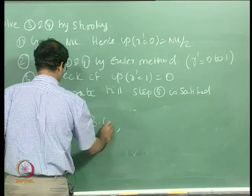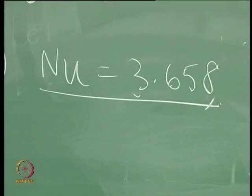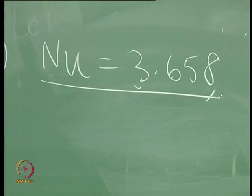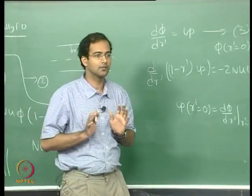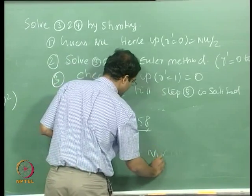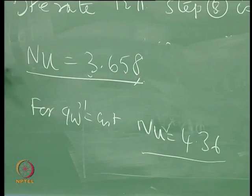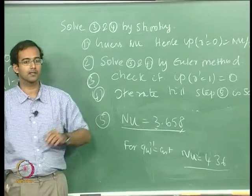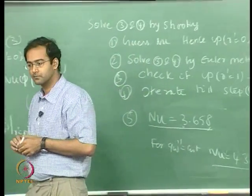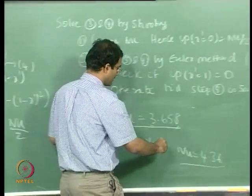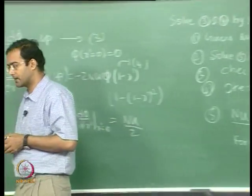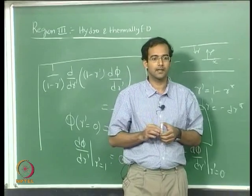You can start with some guess close to the solution and you will find that the Nusselt number for this case comes out to be 3.658. This is a constant value; as I said, if you have a thermally and hydrodynamically fully developed case — that is region 3 — you have a constant Nusselt number whether it is isothermal or isoflux. For the isoflux case the value is 4.36. For the isothermal case, by trial and error you find that at Nusselt number 3.658 the boundary condition is exactly satisfied and psi at R' equal to 1 equals 0.